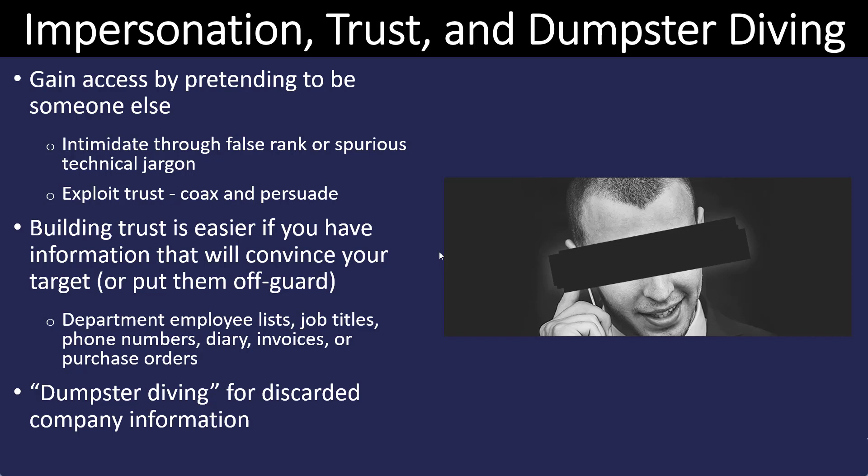Impersonation, trust exploitation, and dumpster diving are all examples of social engineering. Impersonation is simply gaining access by pretending to be somebody else — for example, going to a company and pretending to be some type of technician and then being allowed into a secure area. A bad actor uses the trust of a uniform to get people to reveal information. Dumpster diving is simply somebody going through the trash looking for discarded company information that was not shredded or otherwise disposed of properly.